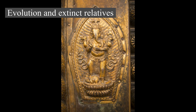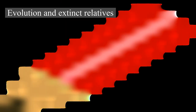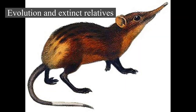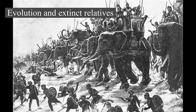Proboscideans experienced several evolutionary trends, such as an increase in size, which led to many giant species that stood up to 500 cm (16 ft) tall. As with other megaherbivores, including the extinct sauropod dinosaurs, the large size of elephants likely developed to allow them to survive on vegetation with low nutritional value. Their limbs grew longer and the feet shorter and broader. The feet were originally plantigrade and developed into a digitigrade stance with cushion pads, and the sesamoid bone providing support. Early Proboscideans developed longer mandibles and smaller craniums, while more derived ones developed shorter mandibles, which shifted the head's center of gravity.